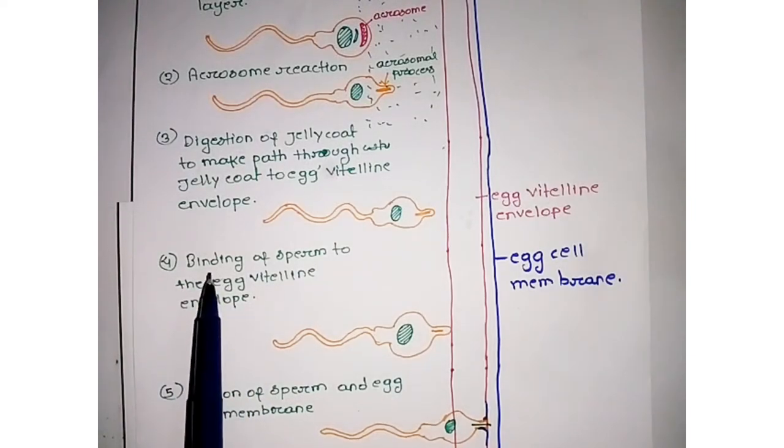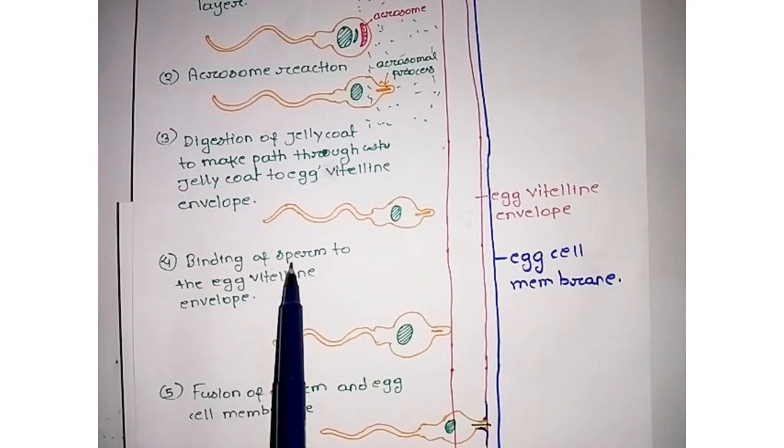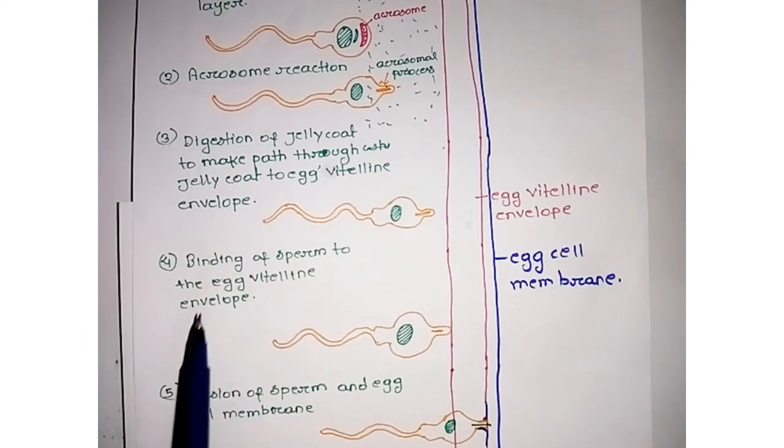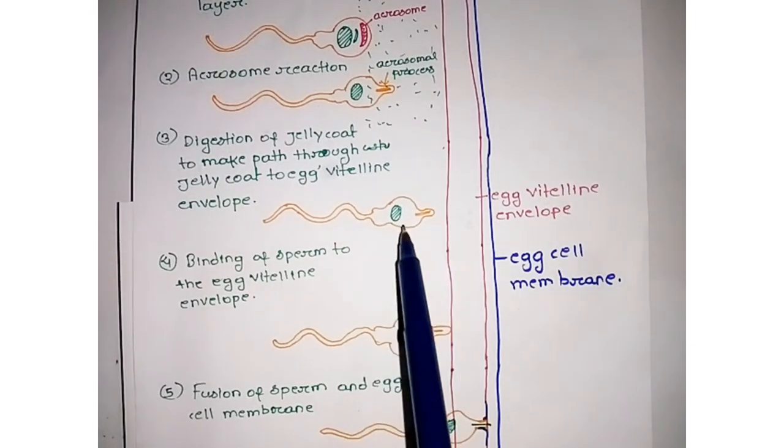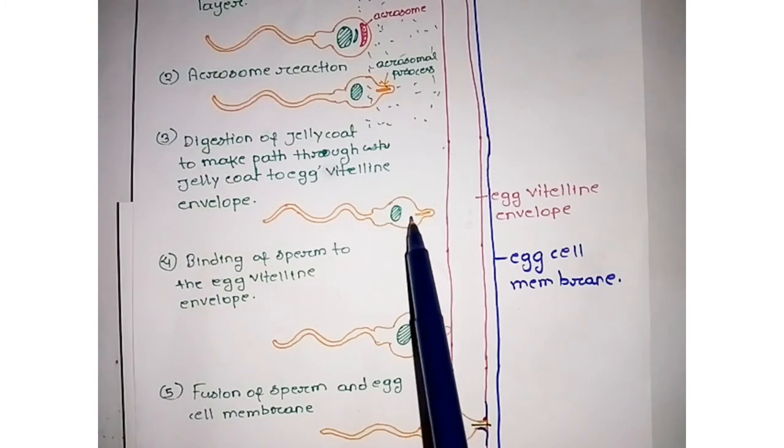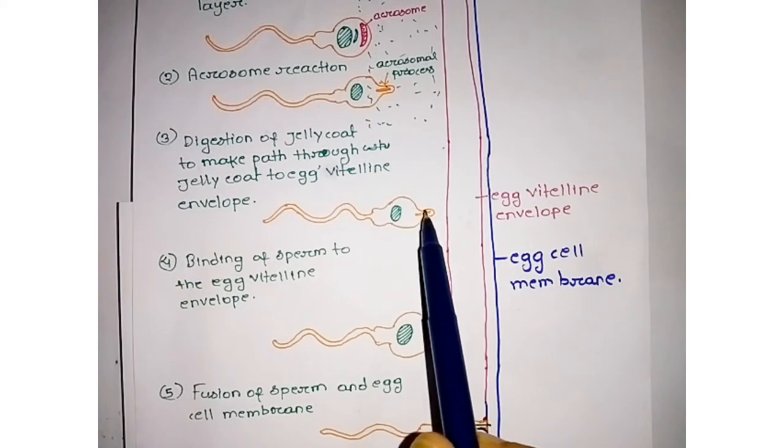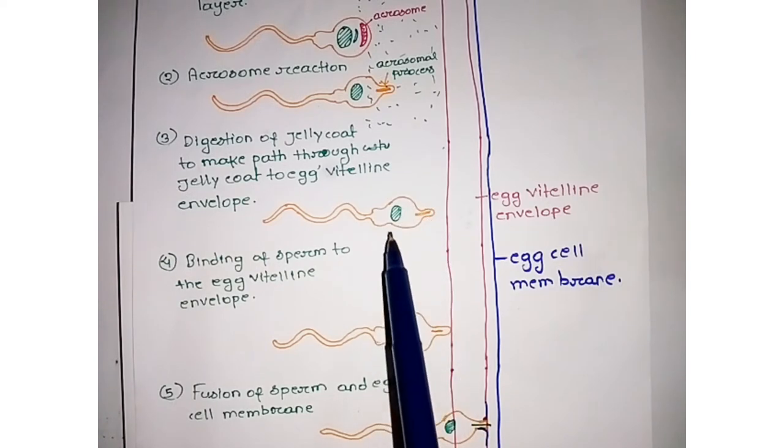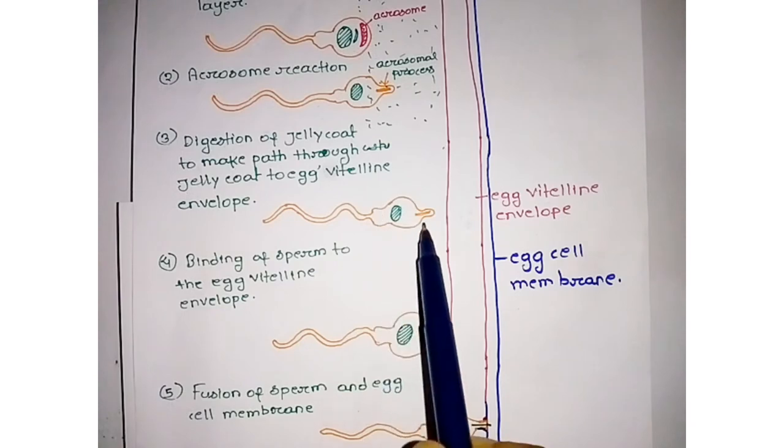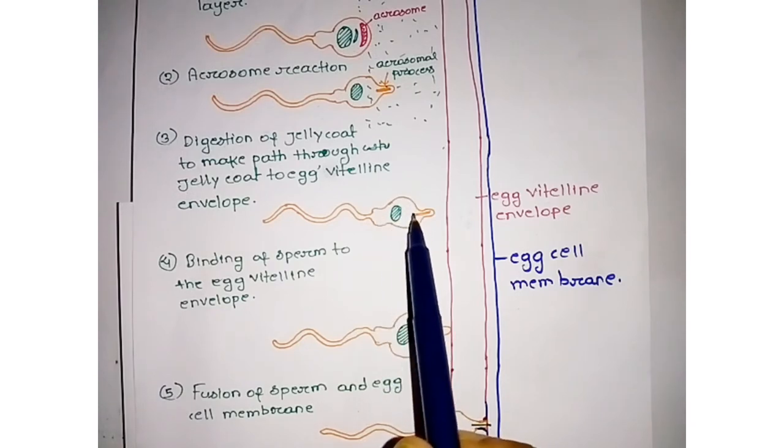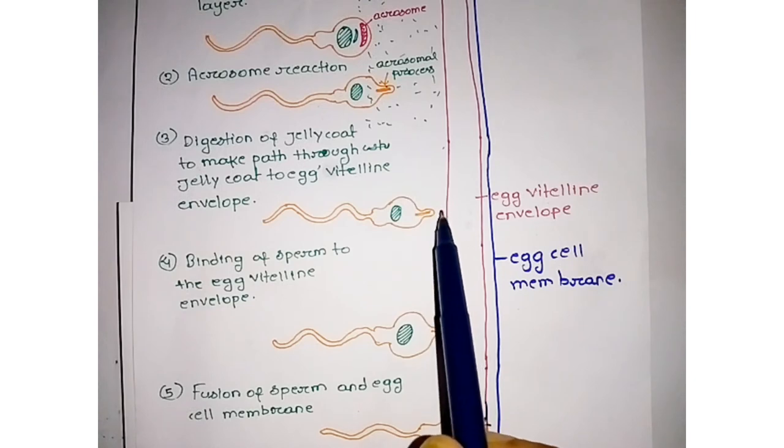At the fourth step of external fertilization in sea urchin, binding of sperm to the egg vitelline envelope occurs. Sperm acrosome releases proteolytic enzymes that digest the jelly coat and make a path through which sea urchin sperm enters into the egg vitelline envelope and binds to it.